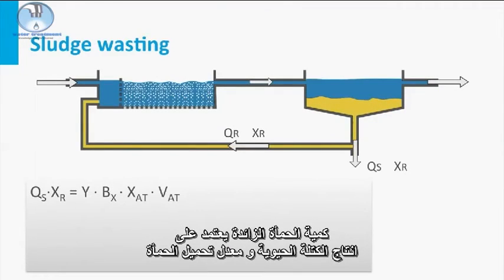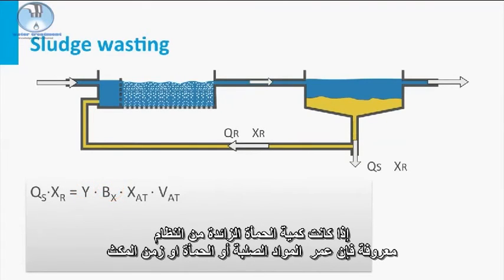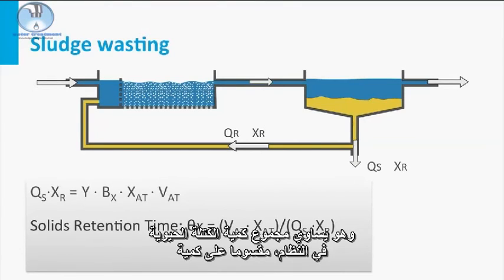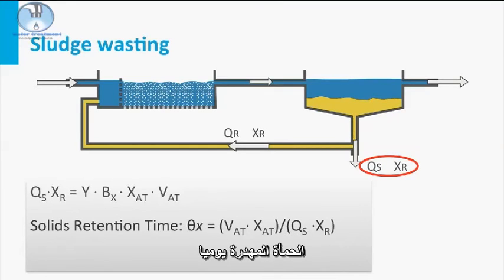The quantity of waste sludge depends on the biomass yield and the sludge loading rate. If the amount of sludge wasted from the system is known, the solids or sludge retention time, or SRT in short, can be calculated. The SRT is the average time sludge stays in the process. It is equal to the total quantity of biomass in the system, divided by the quantity of sludge wasted per day.